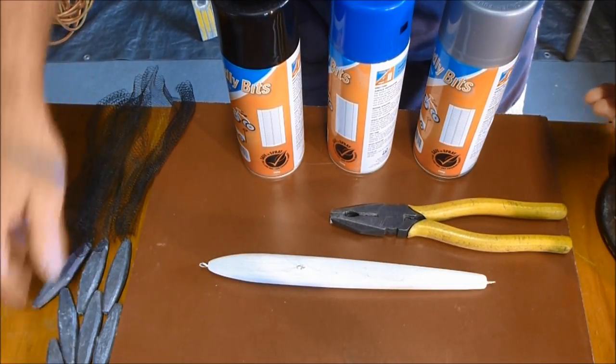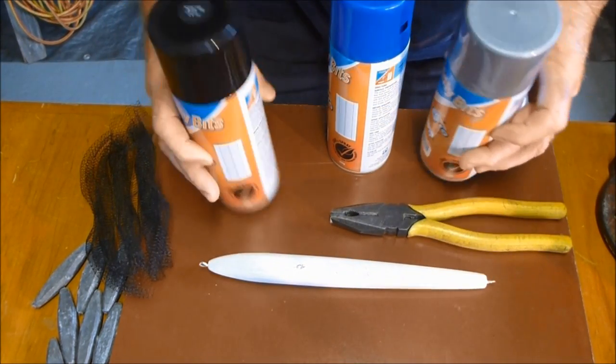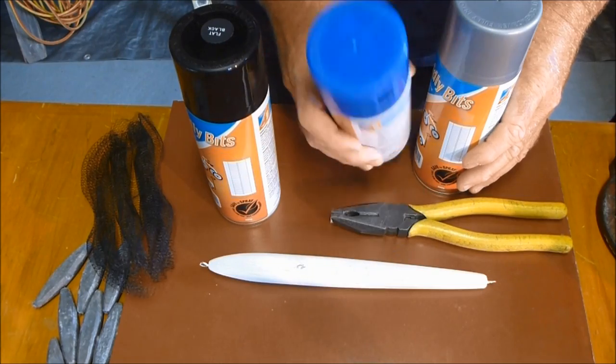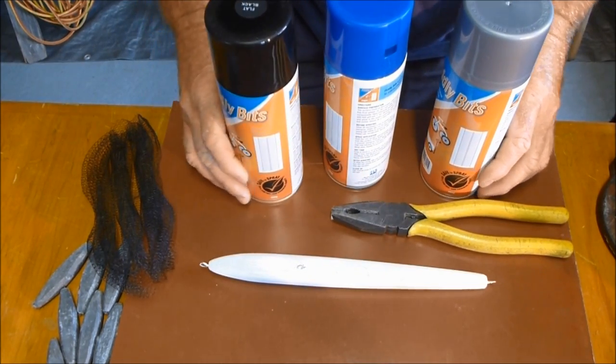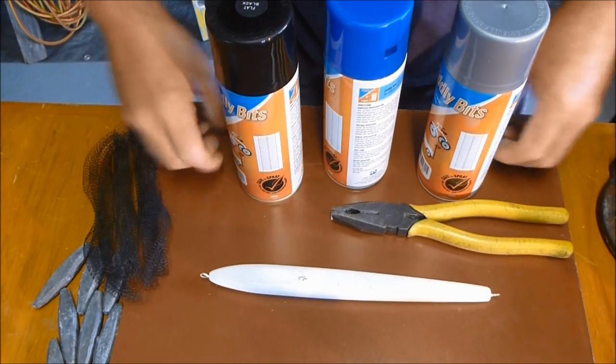Some sinkers over here, just to weigh the mesh down. And I've selected three colours, I've got silver, black, and a nice blue, which for the salt water application with a surface lure, those three colours work really well.